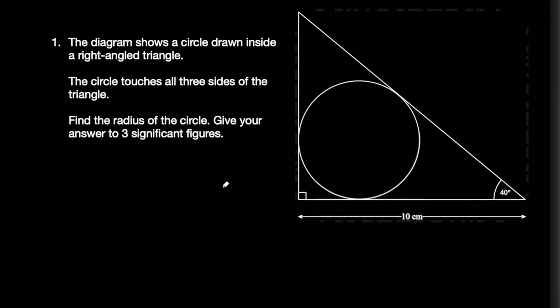Starting off with this problem, the diagram shows a circle drawn inside a right angle triangle. The circle touches all three sides of the triangle. Find the radius of the circle, give your answer to three significant figures. This is a fairly classic problem in trigonometry and geometry. I encourage you to have a go at this one, it's a fairly satisfying solution.